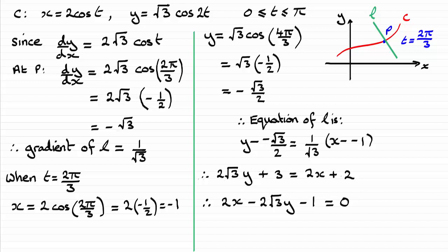Multiplying through by 2 root 3 and rearranging by subtracting 2 root 3 y and 3 from both sides gives the final form: 2x minus 2 root 3 y minus 1 equals 0. The sketch was just to give us a feel for how to tackle the problem — it's not necessarily accurate.